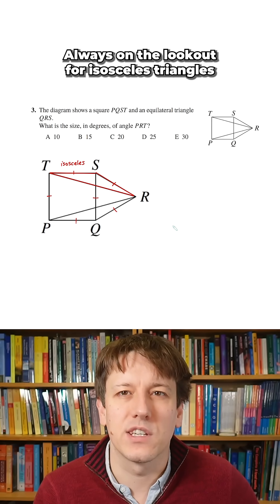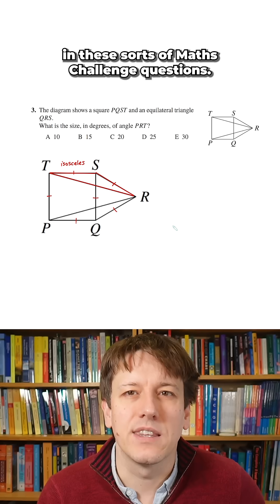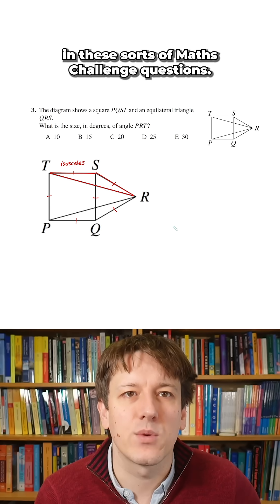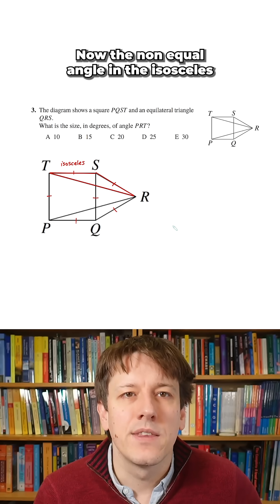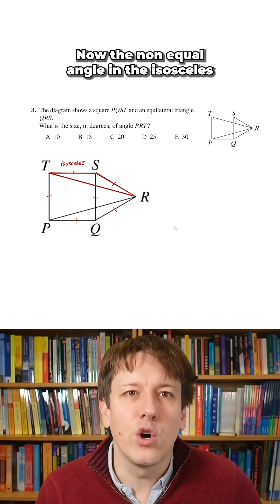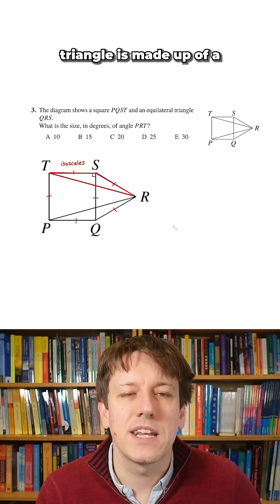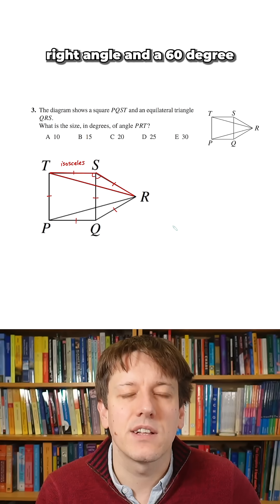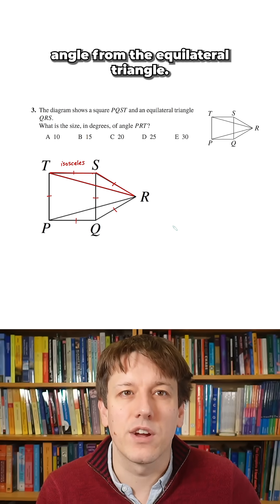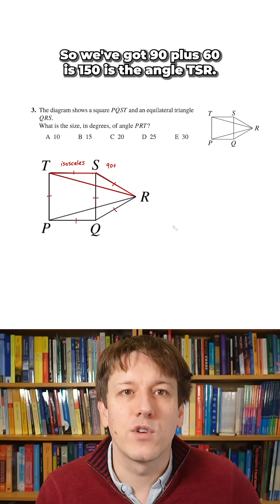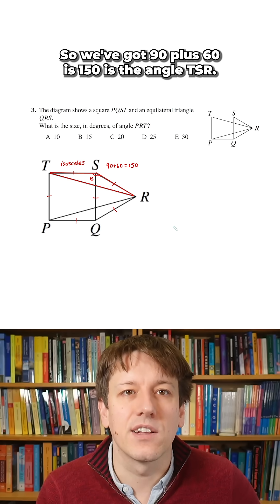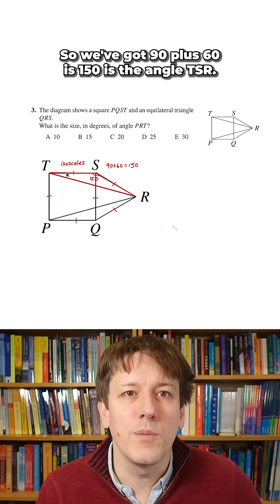We're always on the lookout for isosceles triangles in these sorts of Maths Challenge questions. The non-equal angle in the isosceles triangle is made up of a right angle and the 60 degree angle from the equilateral triangle. So we've got 90 plus 60 is 150 — that is angle TSR.